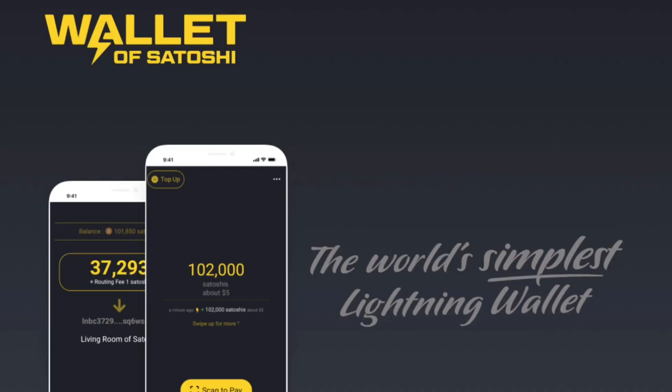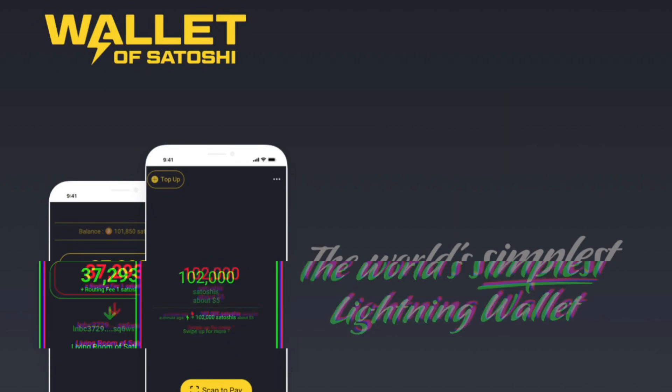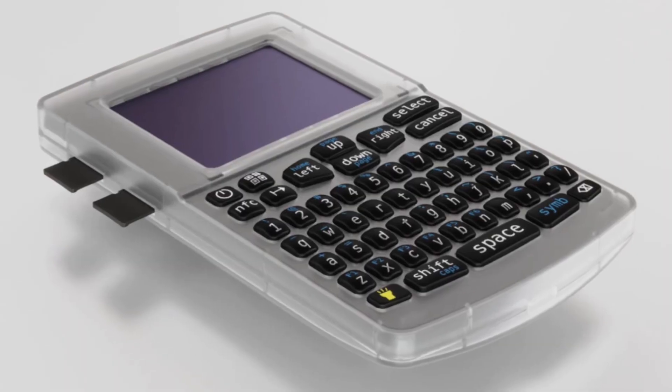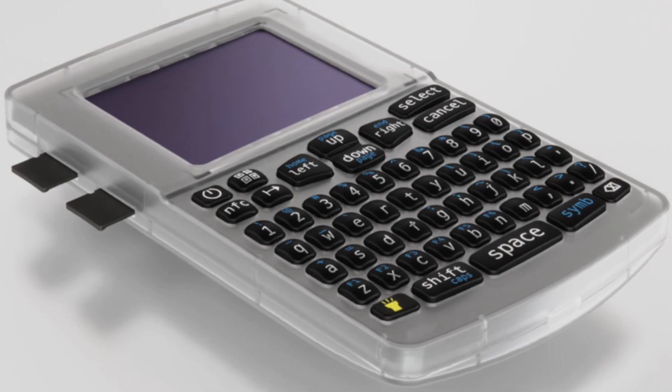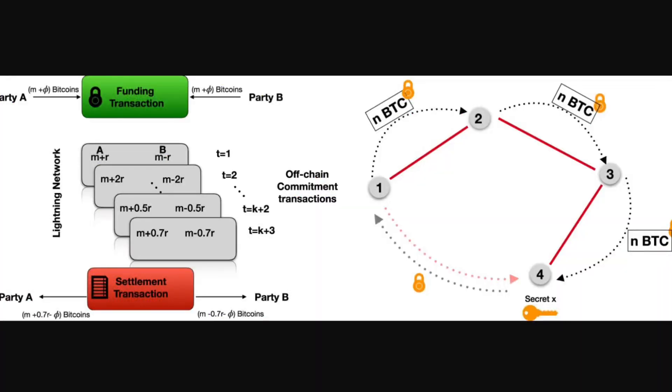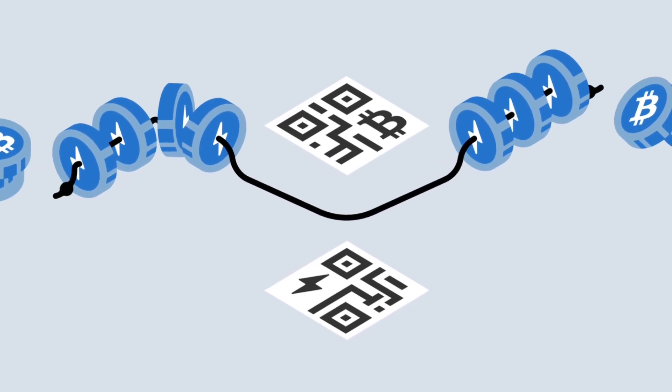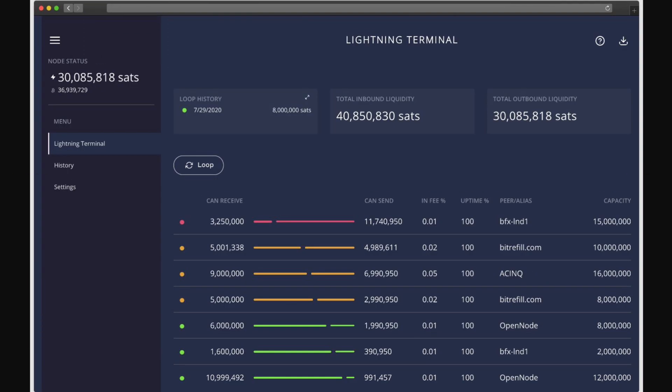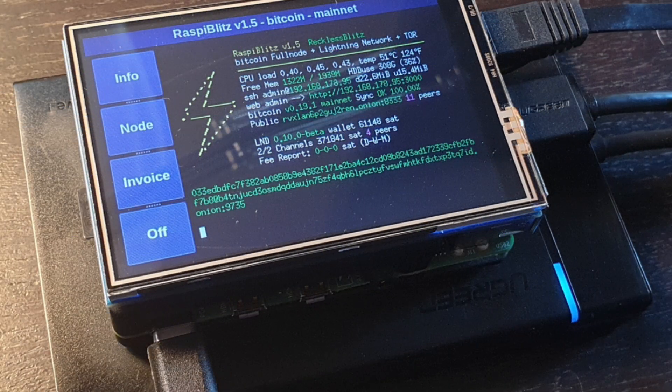Now, besides getting started opening those channels, there are limitations to the Lightning Network. Number one: you're going to need a wallet that's connected to the internet 24/7 — this is called a hot wallet, which is more likely to be attacked than a cold wallet that's offline. Second is the complexity of setting up your channels, having enough liquidity for routing, and maintaining those channels. Third is the hardware, computer resources, and knowledge required to connect to the Lightning Network.